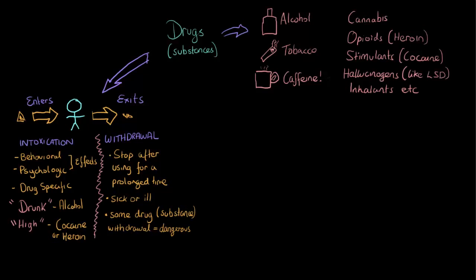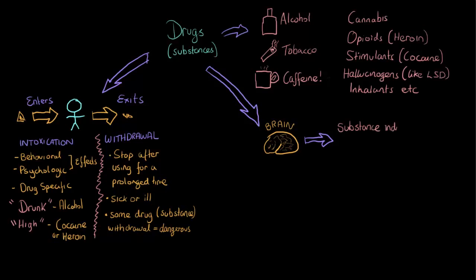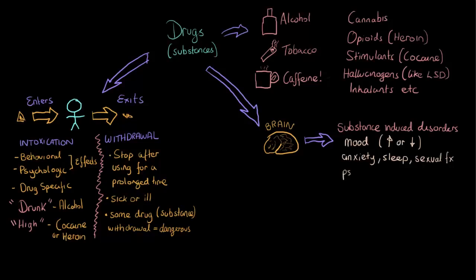Let us also think about drugs in terms of their effects on the human brain. These substances can result in a whole range of other conditions, because they can cause something called substance-induced disorders — conditions actually caused by substances. These include substance-induced mood disorders, where moods may be too high, like mania, or too low, like depression; disorders related to anxiety, sleep, and sexual function. We may also see problems with psychosis, which is a loss of contact with reality, where people can hear voices, see things, or become very paranoid.